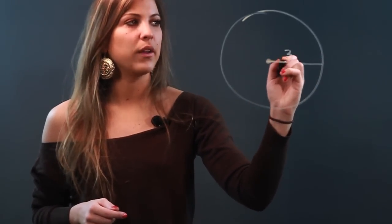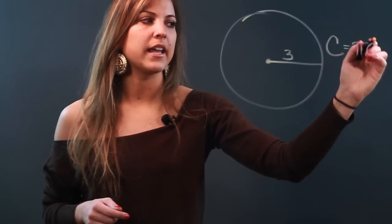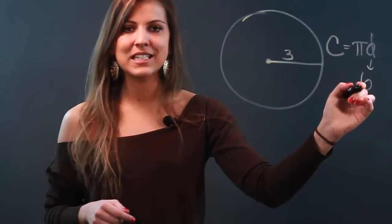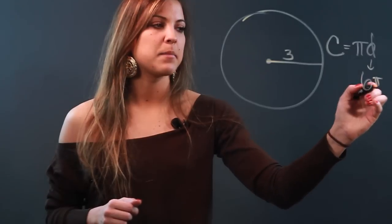Let's say my radius is 3. I know that the formula is circumference equals pi times diameter. So if my radius is 3, then my diameter must be 6 because the diameter is twice the radius. So I have 6 times pi.